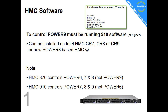To control a Power9 machine, you must be running HMC software 910. You can upgrade your current CR7, CR8 or CR9. A quick note: if you're currently running the 870, the latest version for Power8 machines, that will control Power6, 7 and 8, but not Power9 machines. If you upgrade to the 910 version of the software on your HMC, then that will let you control Power7, 8 and 9, but not the older Power6 machine.